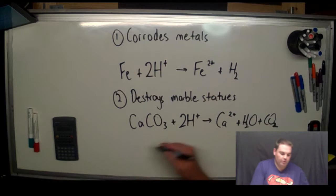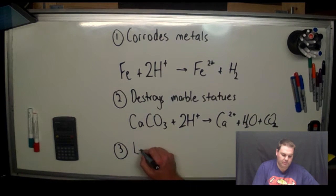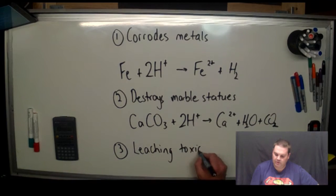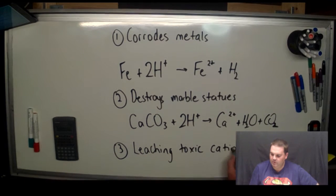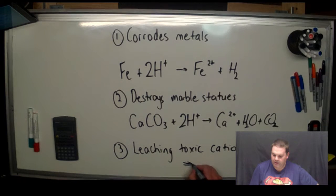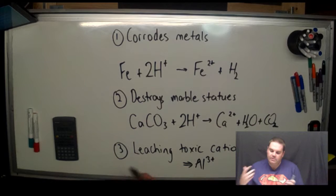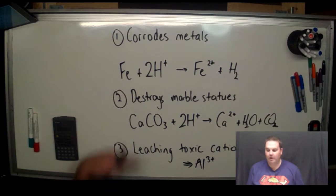The third one, which I'm going into in more detail later, is called leaching of toxic cations, particularly aluminium ions. So acid rain is bad for the environment.